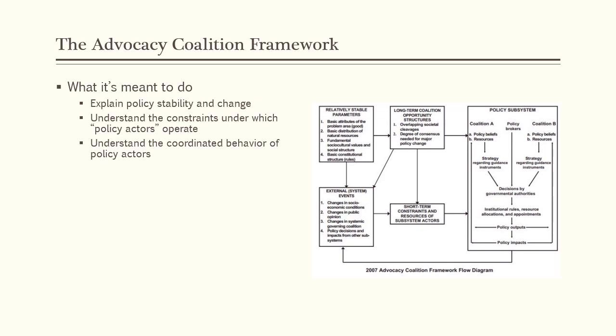There are a few things in particular that the Advocacy Coalition Framework, or as it's usually referred to, the ACF, sets out to do. First, the ACF accounts for the fact that government policy is stable most of the time — government policy usually changes incrementally or not at all. But occasionally, policy can change pretty rapidly and substantially. The ACF helps us understand the conditions under which policy stability and policy change are most likely.